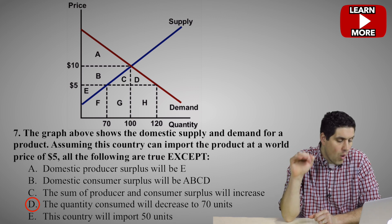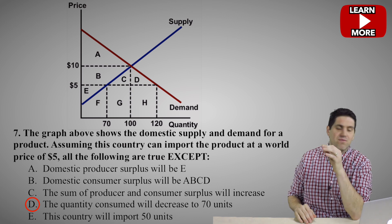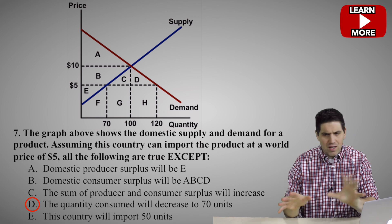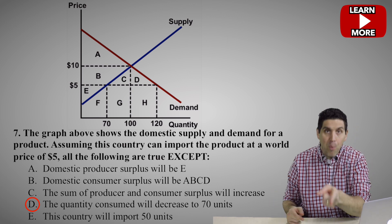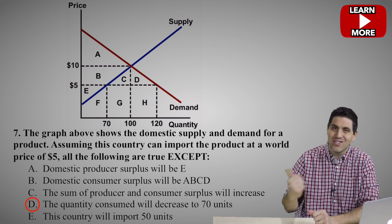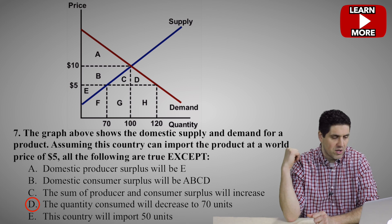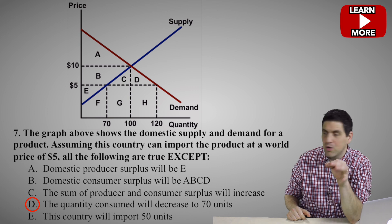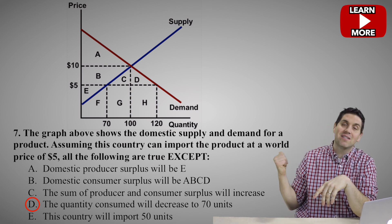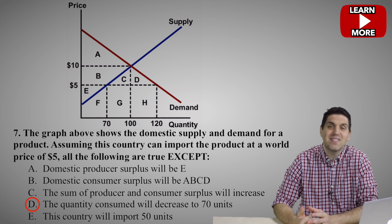The right answer on this one is D: the quantity consumed will decrease to 70 units — that is not true, making it the correct answer since this is an 'except' question. If the price is down at 5, people will want 120 units but we only produce 70 domestically. We're going to import 50 units from other countries, so consumption will be at 120. Domestic producer surplus will decrease — producers are worse off. Domestic consumer surplus will be bigger. Total surplus will be bigger and the country will import 50 units. A, B, C, and E are all true, so D is the wrong statement and thus the right answer.